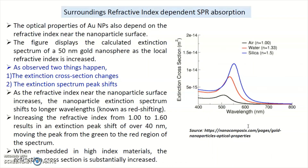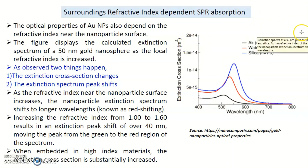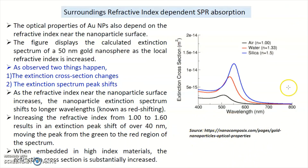Now, the next thing is the surrounding refractive index of the surrounding material — refractive index-dependent SPR absorption. Let us start with this graph. The x-axis is wavelength and the y-axis is extinction cross-section, and this is for gold nanoparticles.